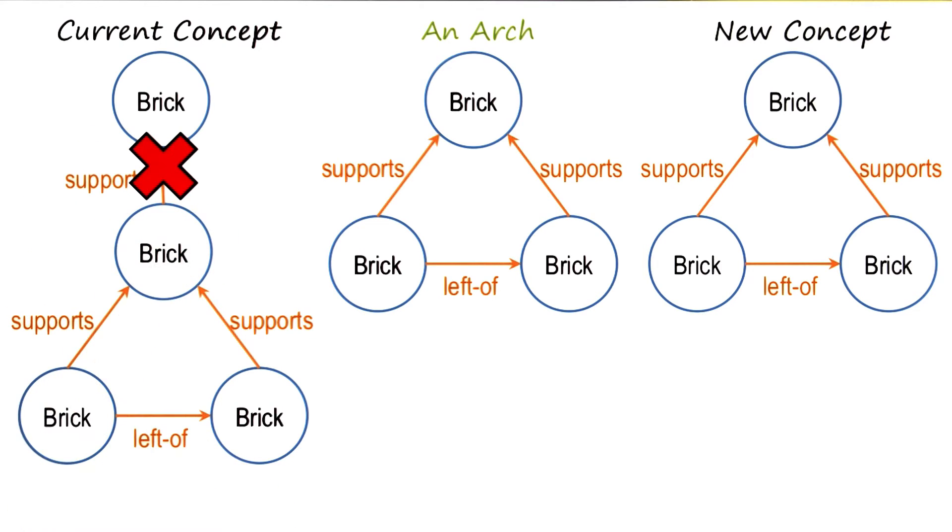If the AI program can drop this link, in that case, this will be the new current concept definition. Note that this current concept definition covers both the second example, as well as the first example. This is called the drop link heuristic.